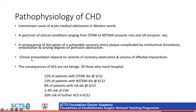Coronary heart disease is most commonly caused by coronary obstruction reducing luminal blood supply, creating a supply-demand mismatch. The consequences of acute coronary syndromes are significant: 12% of STEMI patients die within six months, 13% of NSTEMI patients die within six months, and 8% of unstable angina patients die within six months, even with cardiological treatment. Coronary artery disease is also strongly related to cerebrovascular accidents.